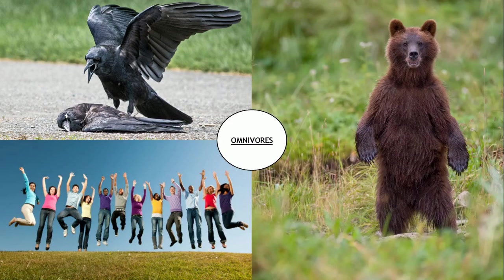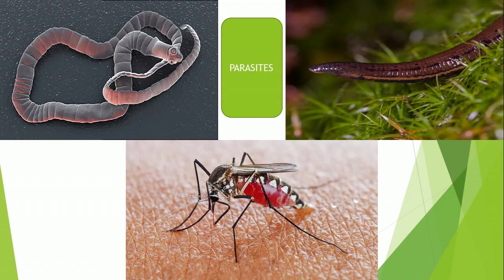Now comes omnivores. Animals which eat both plants as well as flesh are called omnivores, such as bear, human beings, cockroach, and crow. Turtle also eats both plants and small sea animals. Next we will study about parasites. Animals which live inside or on the body of other animals are called parasites, such as tapeworm and roundworm which live inside the body. Mosquitoes, leeches, and bugs are also parasites because they live on the blood of other animals and have sucking tubes to suck blood.